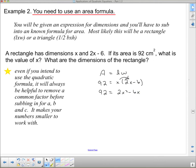And now to get one side equal to 0, the easiest way is to move the 92 over. So, 2x squared minus 6x minus 92.